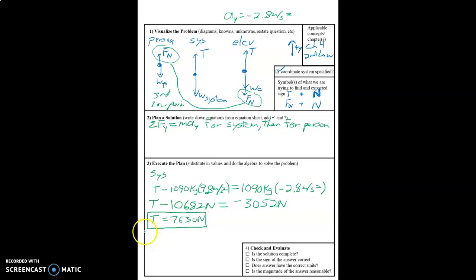Now we're going to sum forces on the person. We'll say the normal force minus the weight of the person, 90 kilograms, times 9.8